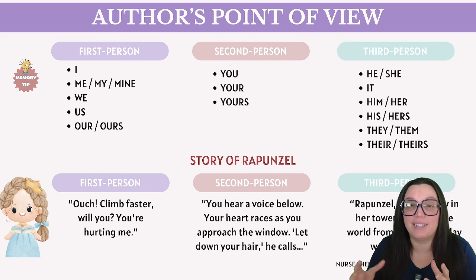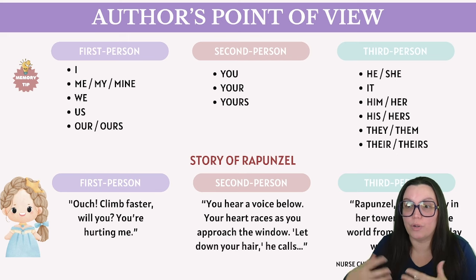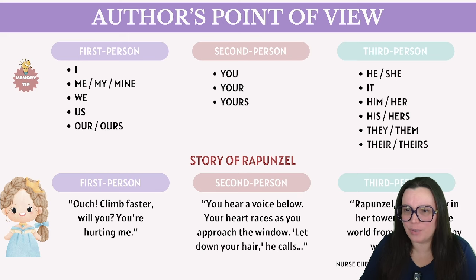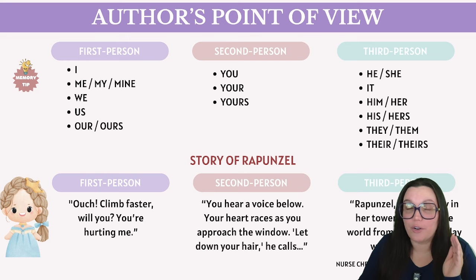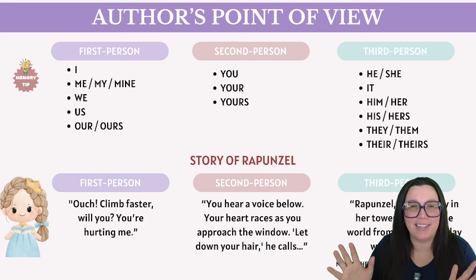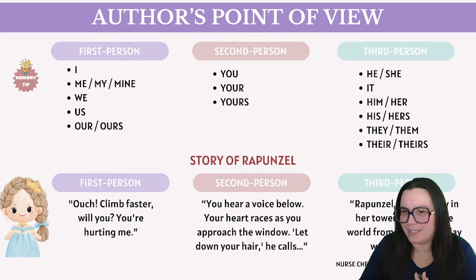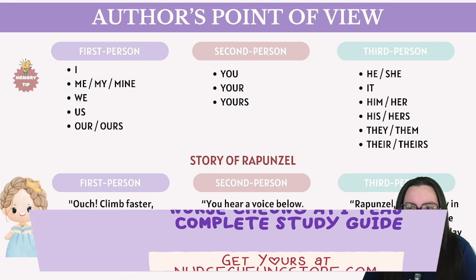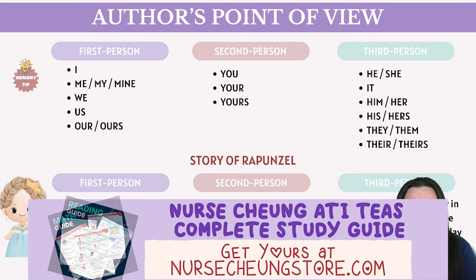In second person, you are telling the story — you are Rapunzel. You could say: 'You hear a voice below. Your heart races as you approach the window. Let down your hair, he calls. You hesitate, then release your braided locks, feeling a tangle of excitement and fear.'